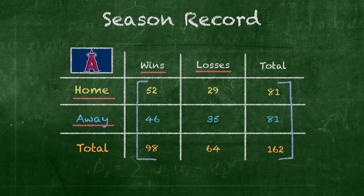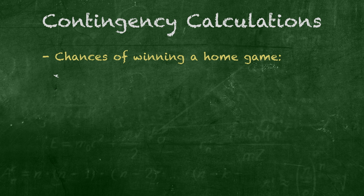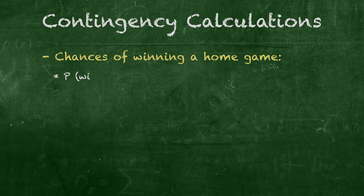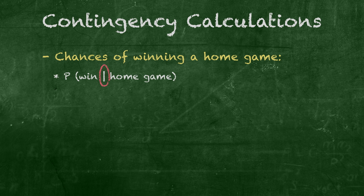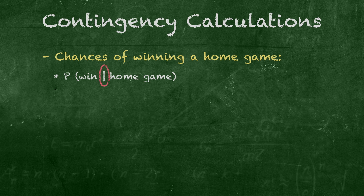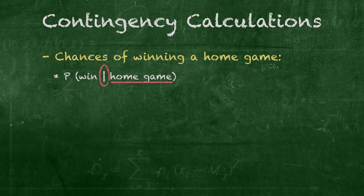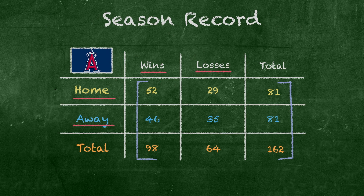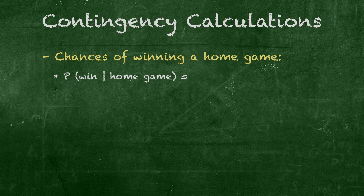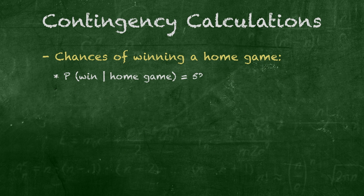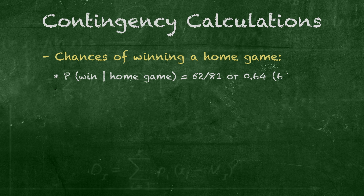So, if we wanted to find the Angels' chances of winning a home game... Using probability notation, we'd say P — the probability of a win given that it was a home game — with the vertical line representing what is given and to the right of the line what true conditions need to be. Back to the table, we see the Angels won 52 of their 81 home games. So the probability of winning a home game is 52 out of 81, or .64 — that is 64 percent.